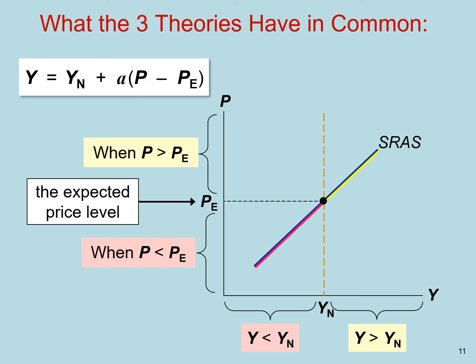When prices are below the expected level of prices, again, that difference in the equation between P and P sub E is negative. Unsurprisingly, we find that the level of short run output is below the natural levels, YN.